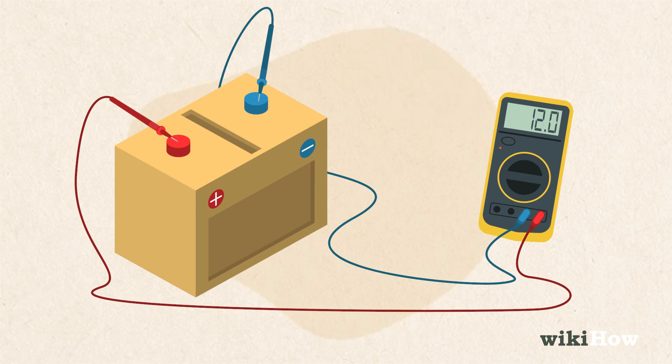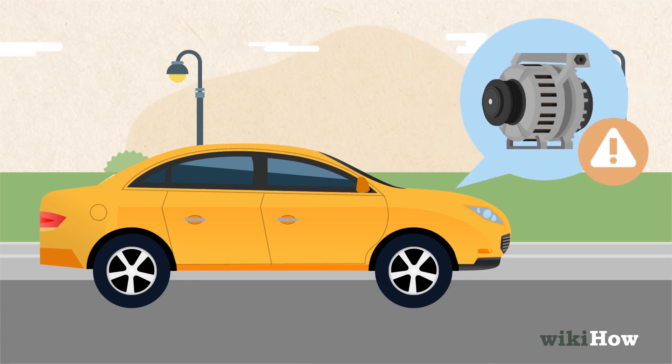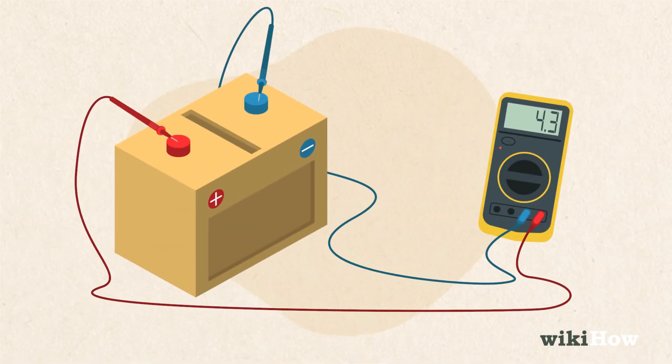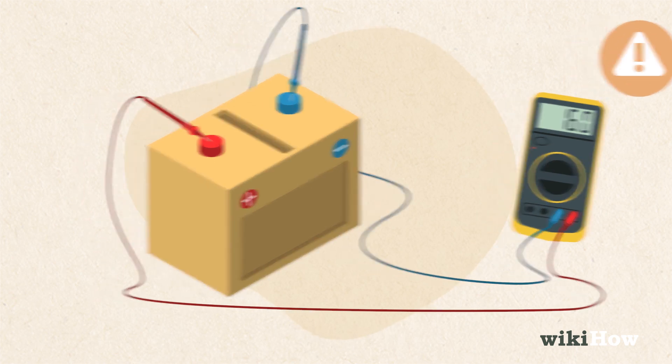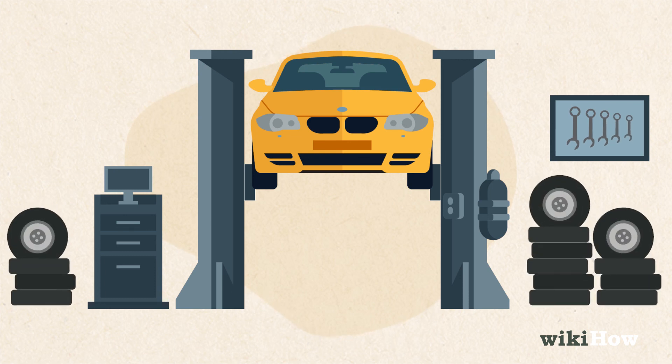If the reading stays the same or drops, that means the alternator isn't charging and you may need a new one. If the reading is more than 2 volts higher, that could mean that your alternator is overcharging. Either way, take your car to an auto repair shop to find out what's wrong.